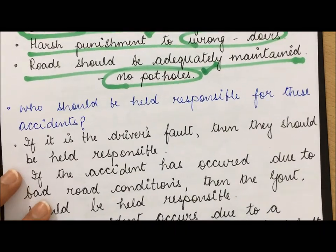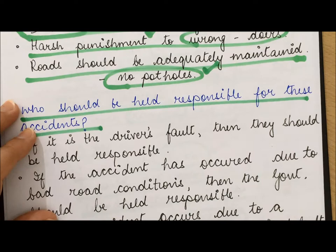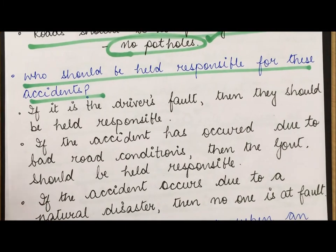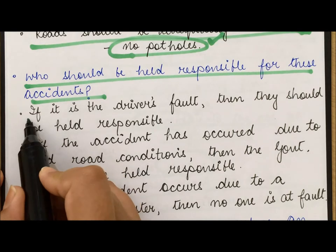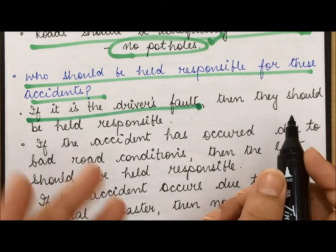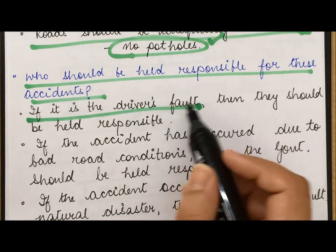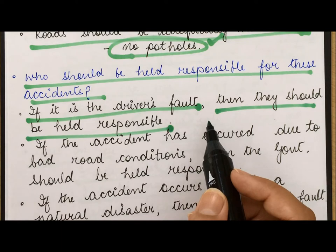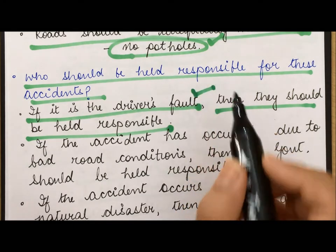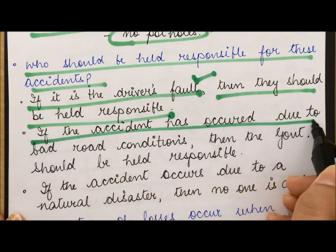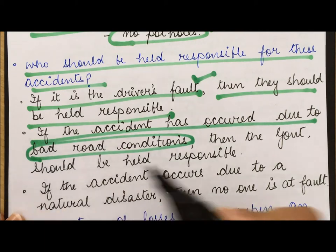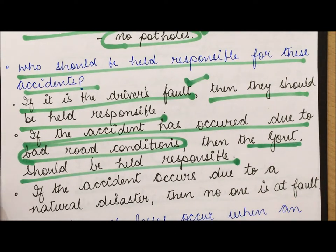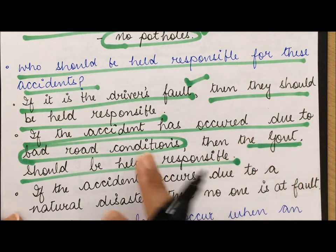The next question is: who should be responsible for accidents? We need to look at this objectively since accidents are of many types. If it is the driver's fault — for example, if the driver was speeding, drinking, or talking on the phone — then the driver should be held responsible. If the accident occurred due to bad road conditions such as potholes, then the government should be held responsible, since maintaining roads is the government's duty.